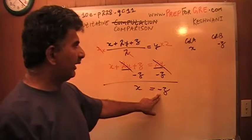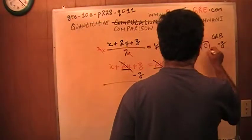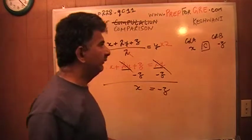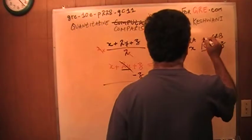You see, x equals negative z. These two columns are equal. That's all. The answer is C.